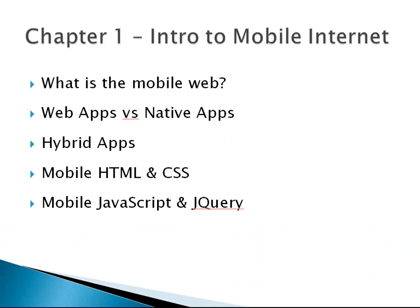In Chapter 1, we'll discuss the mobile internet in general, including what a web app is, what a native app is, and the difference. We'll talk about hybrid apps, which is basically what we'll be building. The apps will appear as a native app but will actually be written in HTML5, JavaScript, and CSS. We'll also cover HTML, CSS, JavaScript, and jQuery from a mobile standpoint — kind of a refresher course.